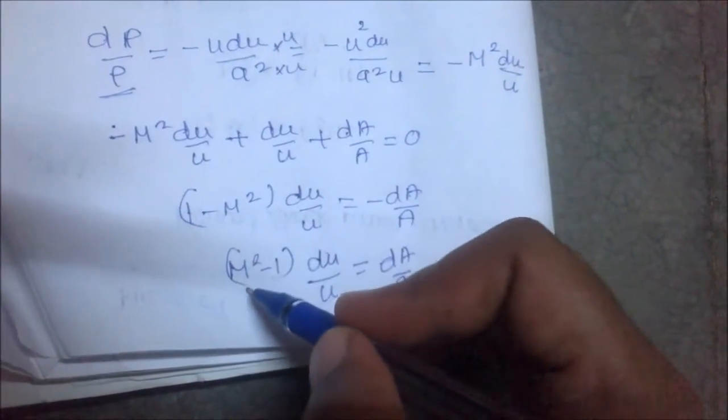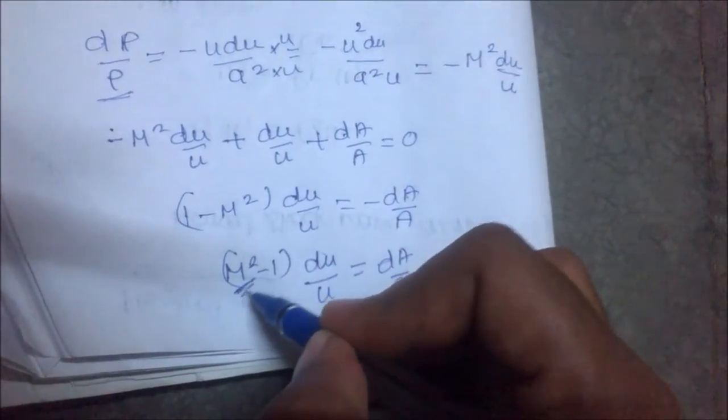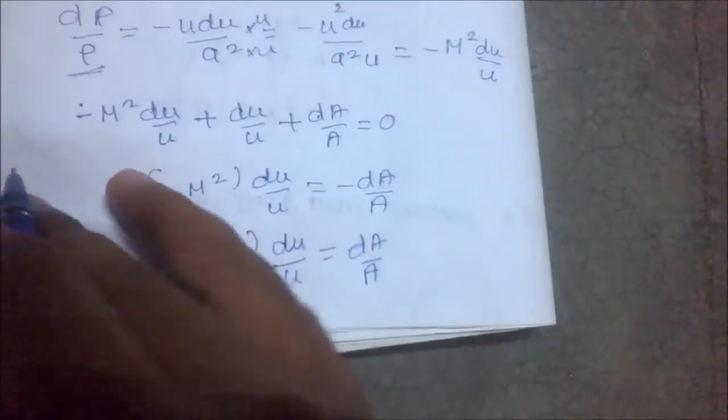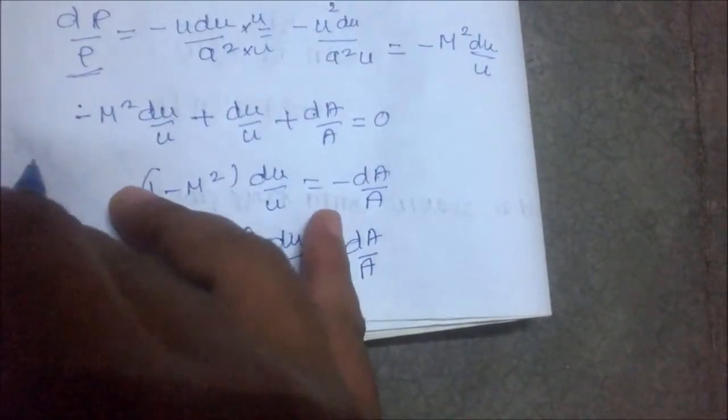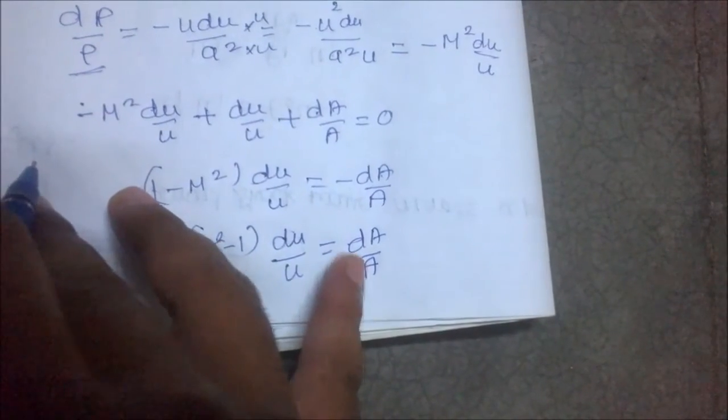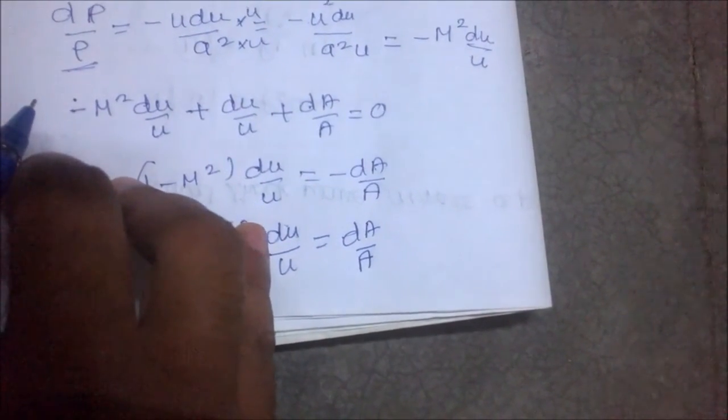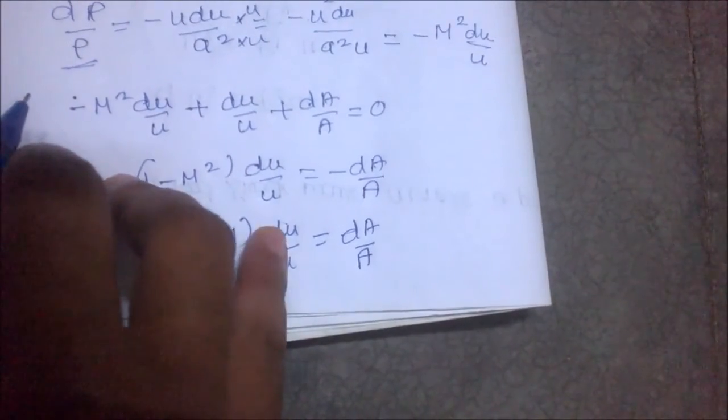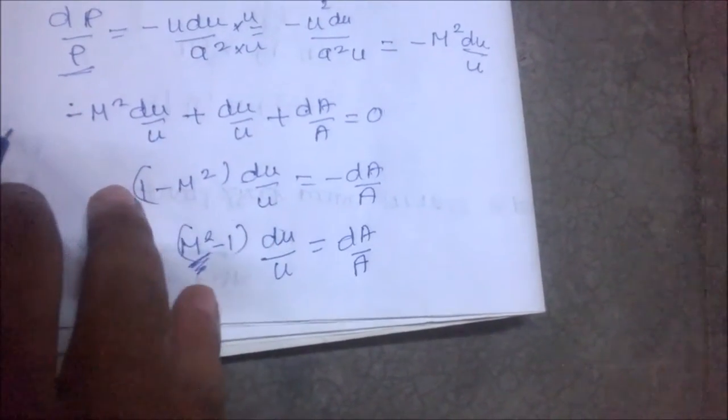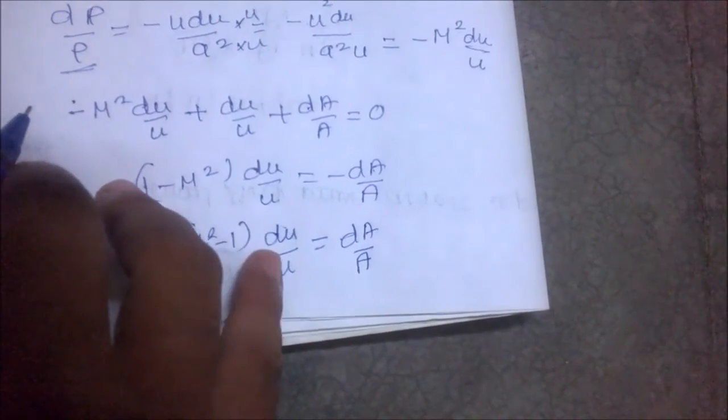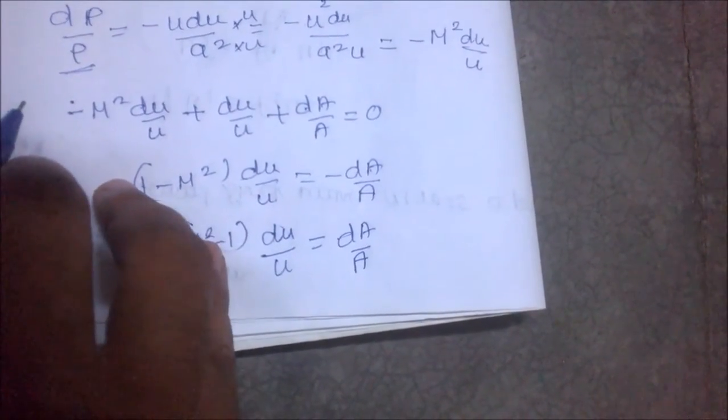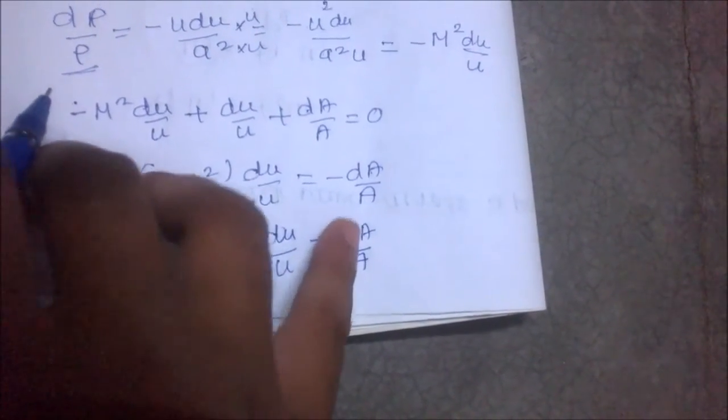For incompressible flow where M = 0, the area ratio increases according to the negative of the velocity increase, or vice versa - the velocity increase is the negative of the area increase.